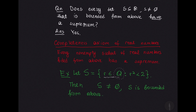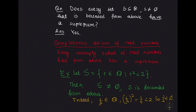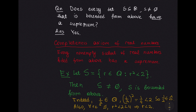To appreciate the importance of the completeness axiom, consider the set S of all rational numbers whose squares are less than 2. You can verify this set is not empty — for instance, one-half is a rational number and (1/2)² = 1/4, which is less than 2, so one-half belongs to S. Also, for every element R in S, R² < 2 < 4, so R < 2, meaning the set S is bounded above by 2.